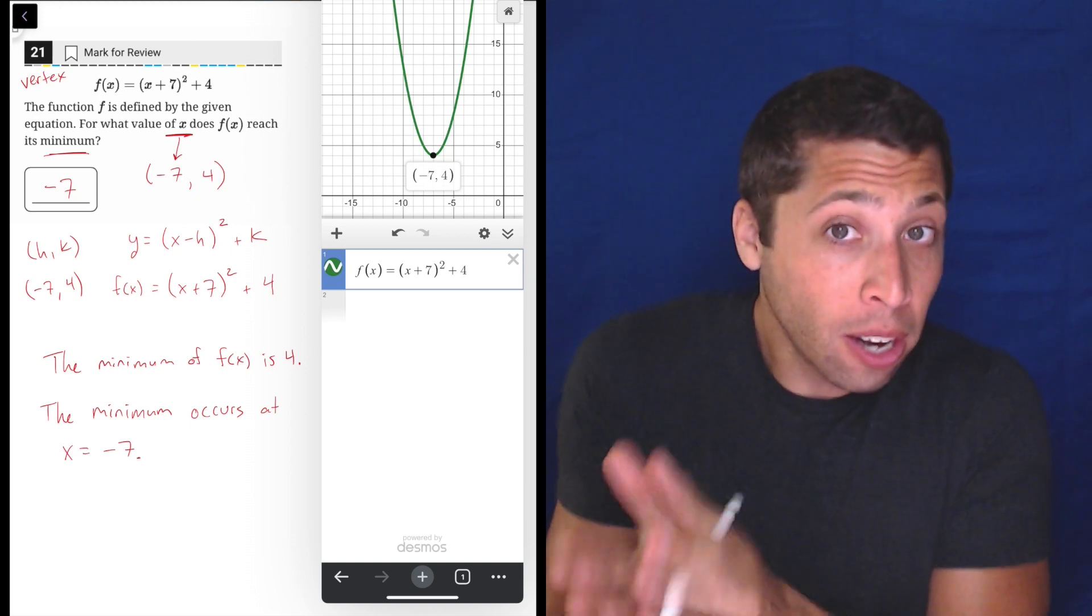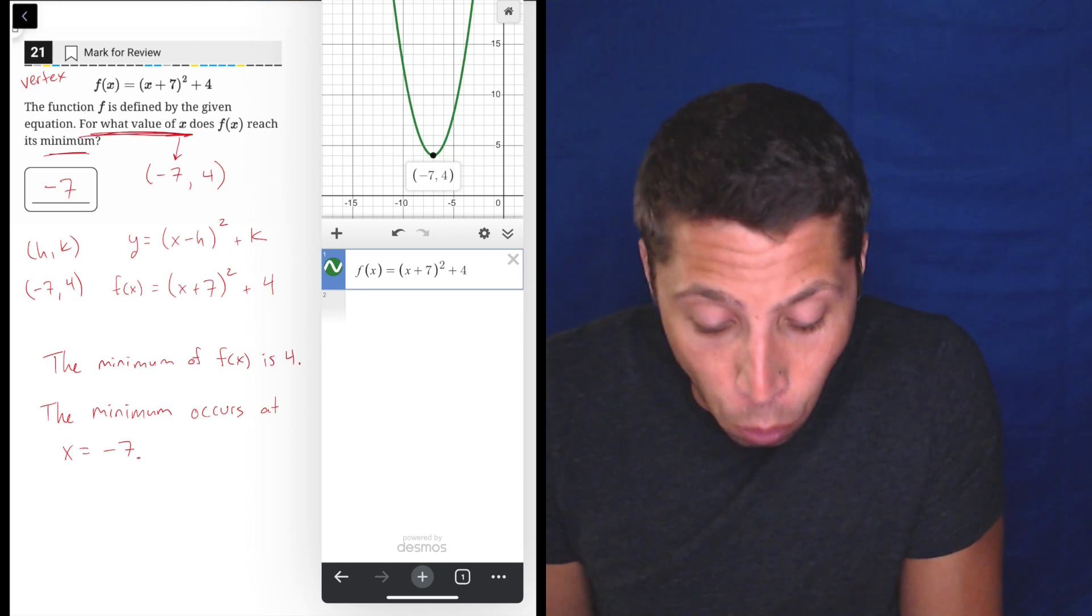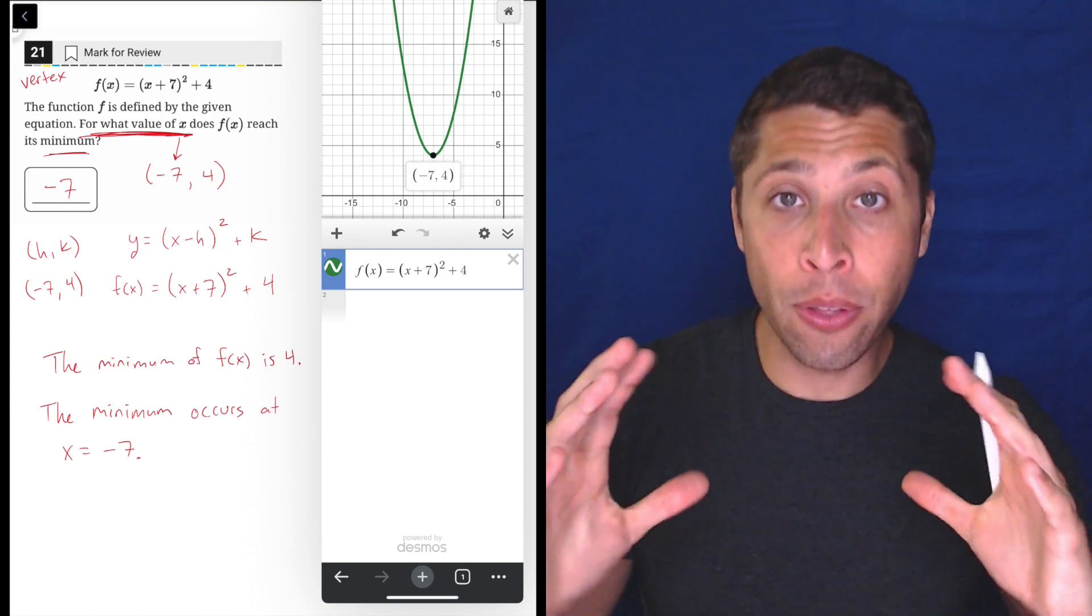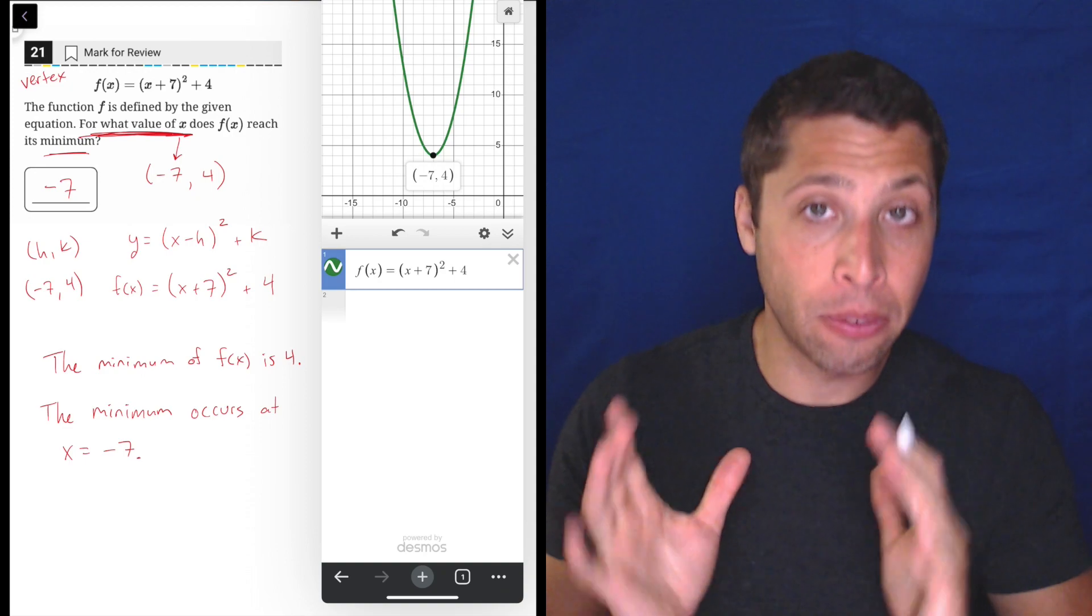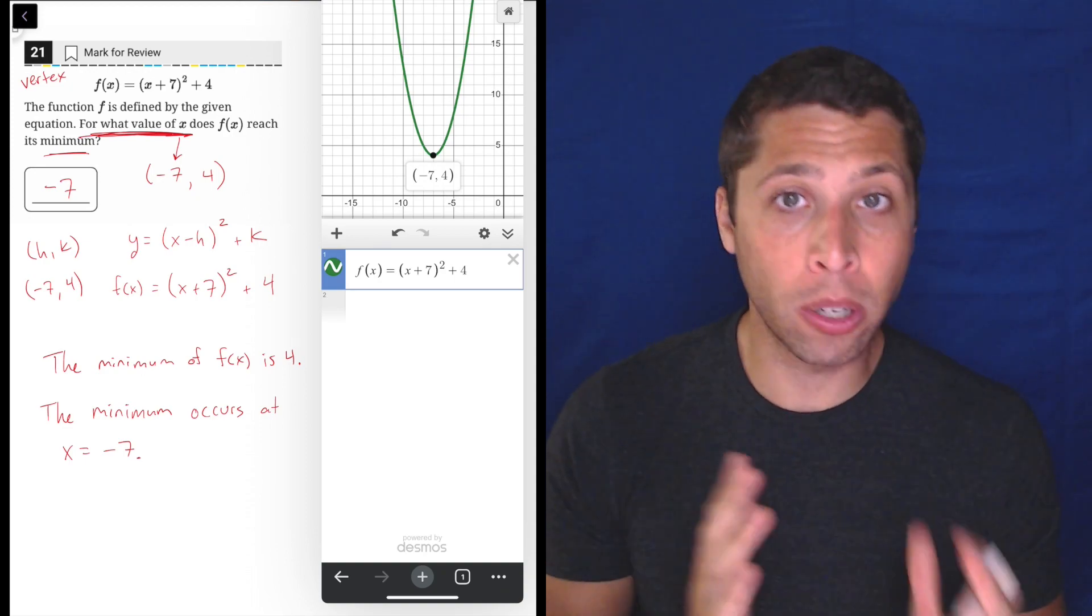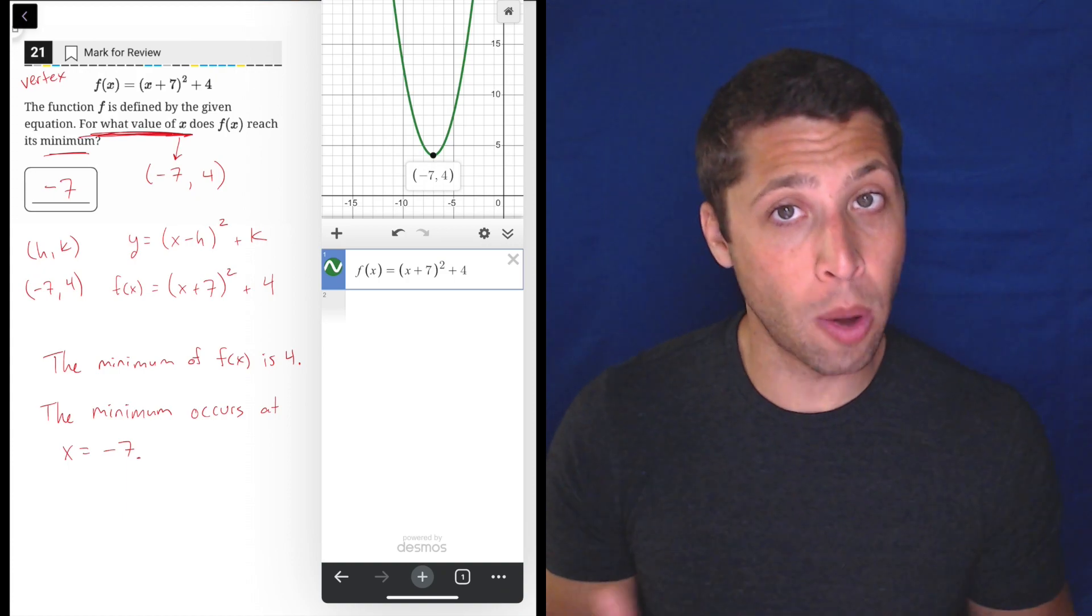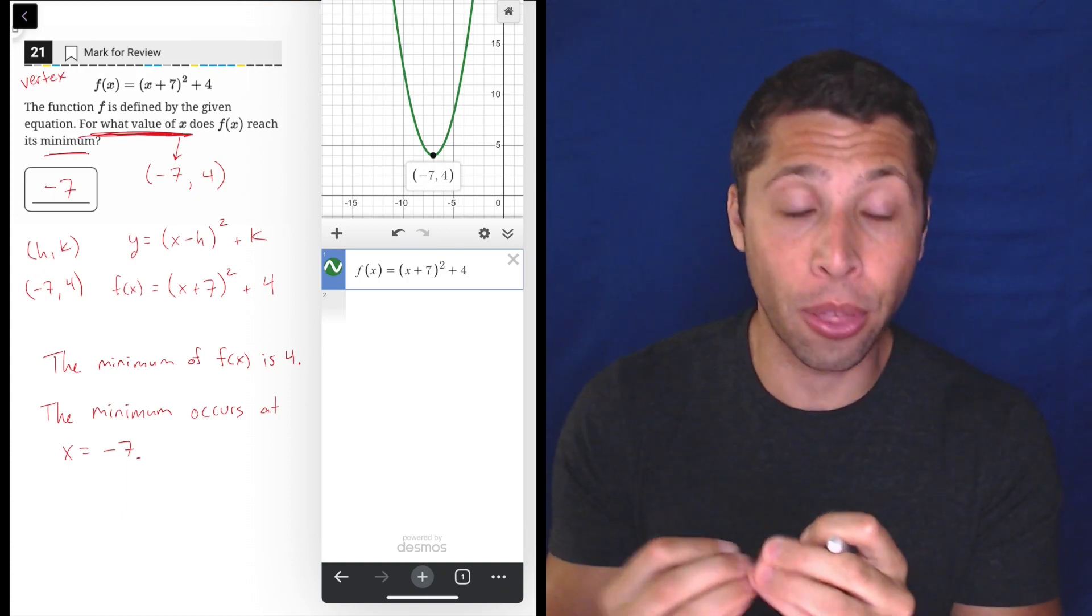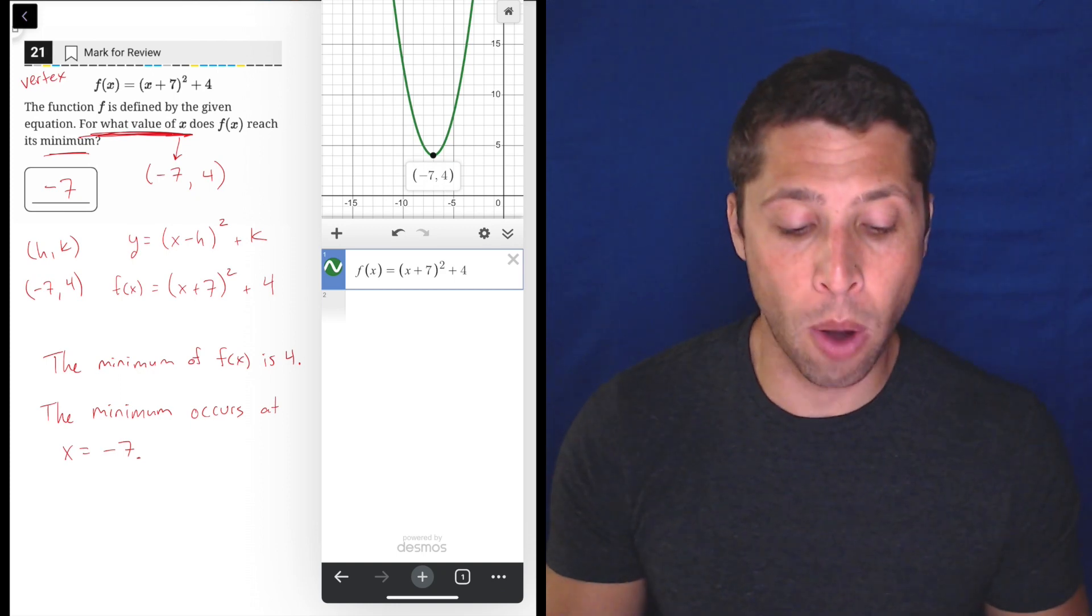Again, they are clear that they want the x value, for what value of x, right? So if it helps you write down the entire point, the negative seven, four, write it as a coordinate. That way you can then be like, alright, well, which one do they want? Do they want the x or do they want the y? And hopefully the wording of the question and just seeing both will help you identify which one they want.